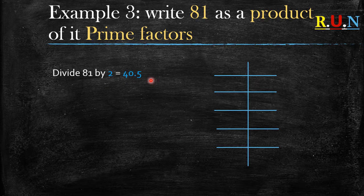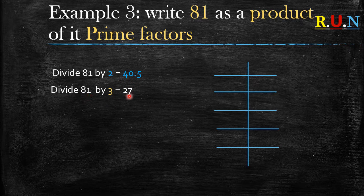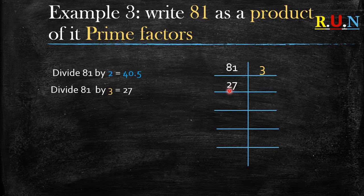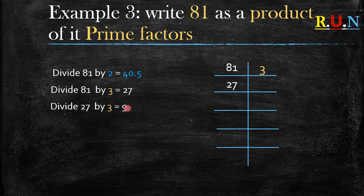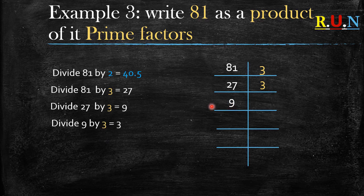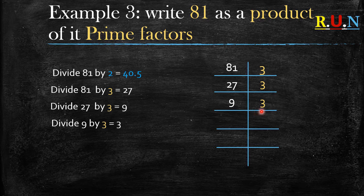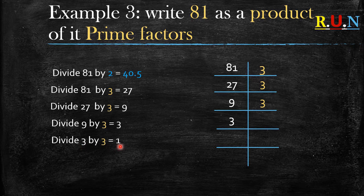Example number three: write 81 as a product of its prime factors. 81 divided by 2 gives a decimal, so we skip 2. 81 divided by 3 gives 27, which is a whole number. So we write 81 on the left and divide by 3. 27 divided by 3 gives 9, which is also a whole number. We continue — 9 divided by 3 gives 3, still a whole number.